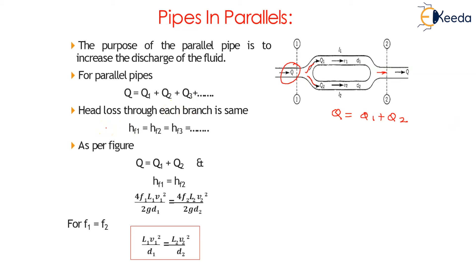Head loss through each branch is the same: HF1 = HF2 = HF3, and so on. Equating HF1 and HF2 for two pipes: 4F1·L1·V1²/(2g·D1) = 4F2·L2·V2²/(2g·D2). If F1 = F2, the coefficient of friction is the same for both pipes, so 4F1 and 4F2 cancel, and 2g cancels from both sides, giving L1·V1²/D1 = L2·V2²/D2.